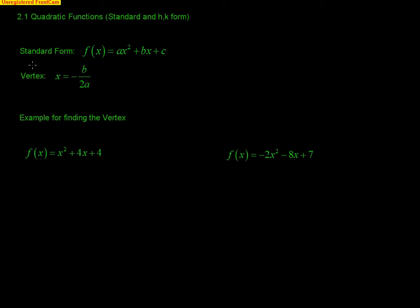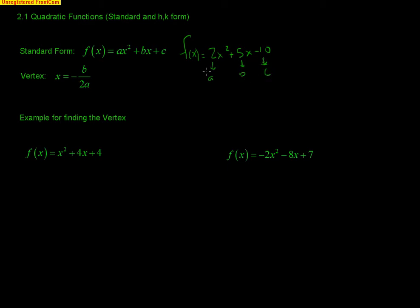The first thing I have up here is the standard form of a quadratic: ax squared plus bx plus c. For example, f of x equals 2x squared plus 5x minus 10 — there's your a, there's your b, and there's your c right there. So just identifying the parts.